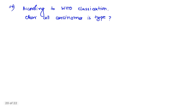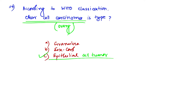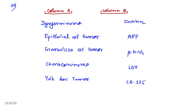Question number 19: According to WHO classification, clear cell carcinoma of the ovary — under which category does it fall? The options were granulosa cell type, sex cord stromal tumor, epithelial cell tumor, or mixed. Clear cell carcinoma is a variety of epithelial cell tumor. So the answer is: clear cell carcinoma is an epithelial variety of ovarian tumor.